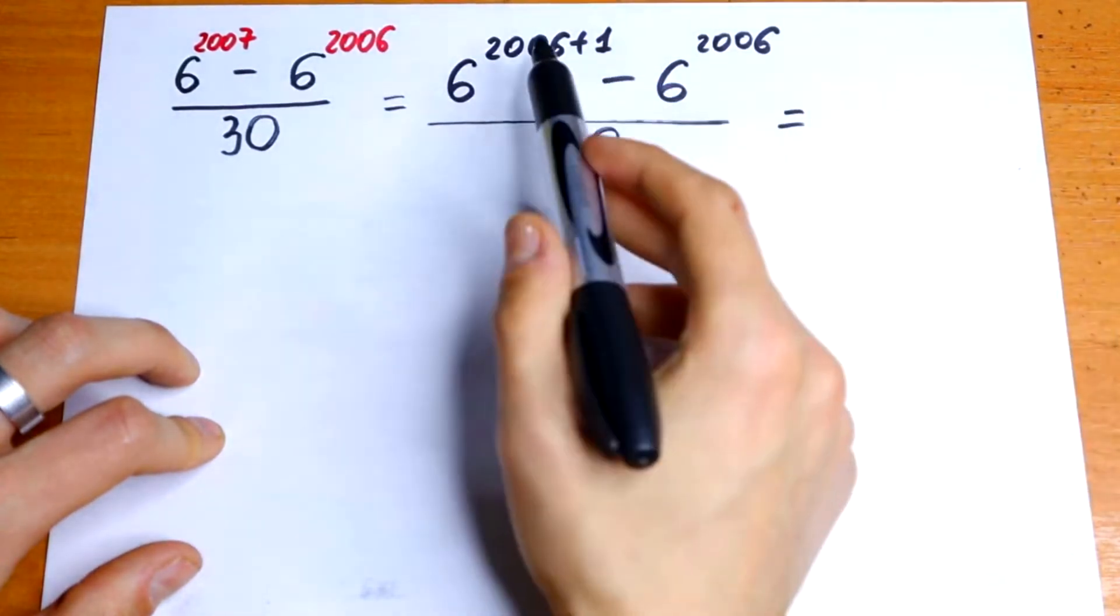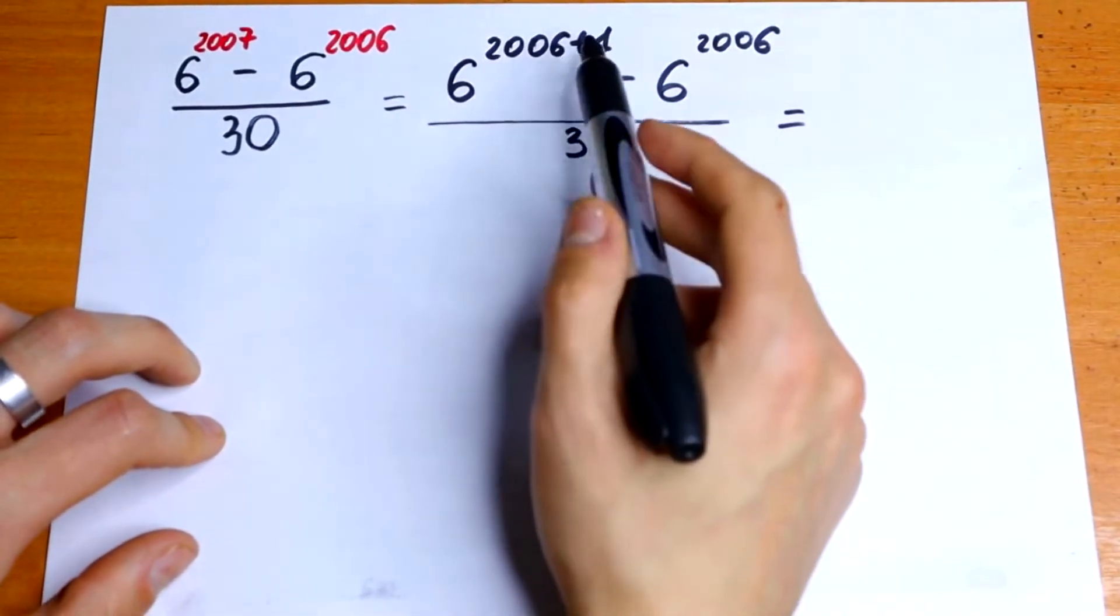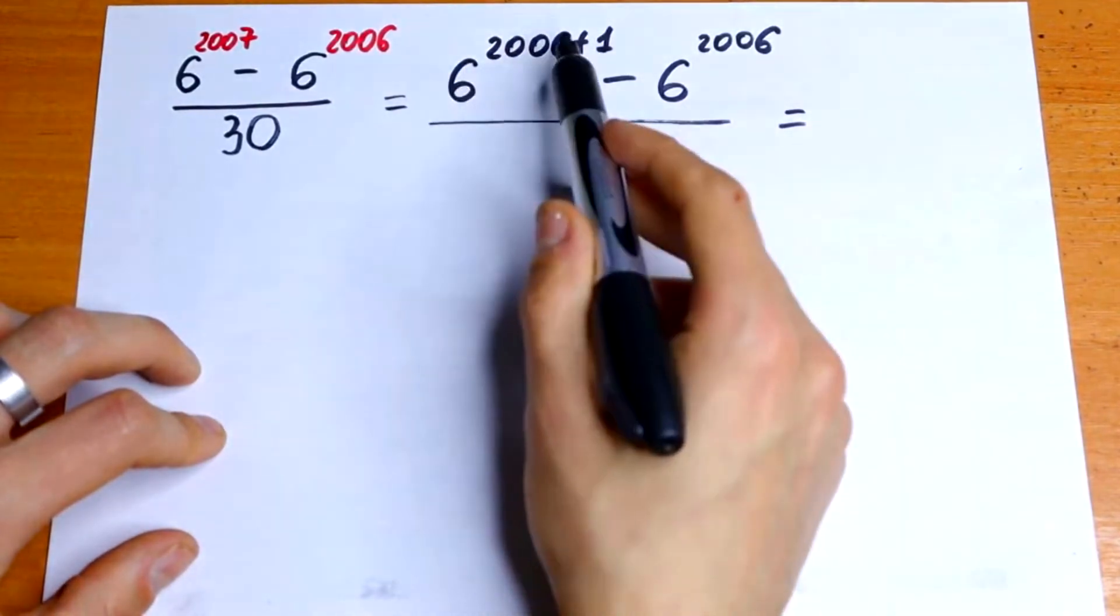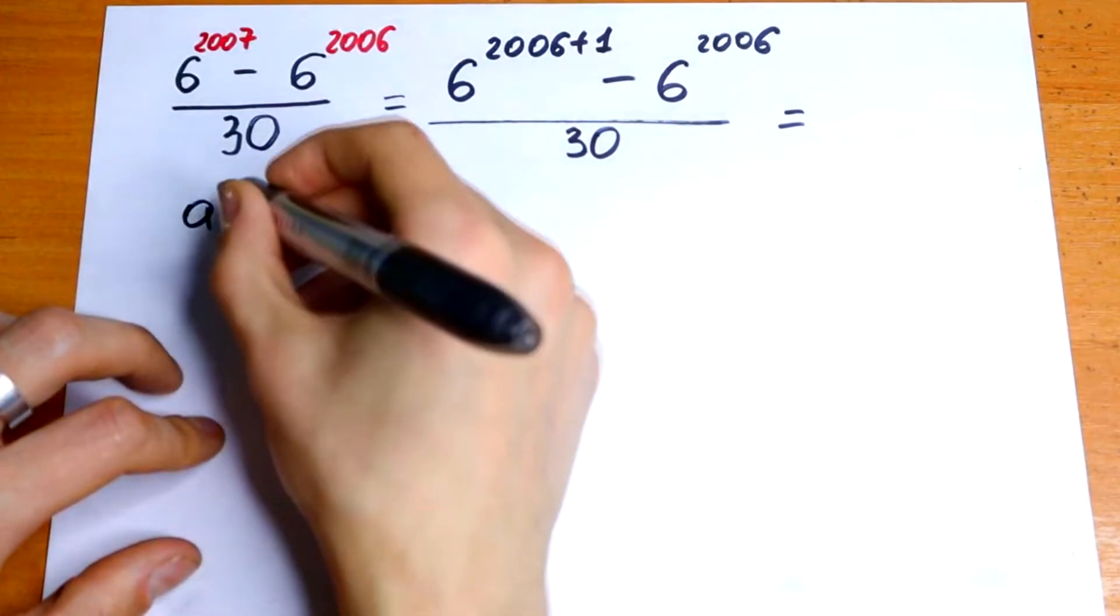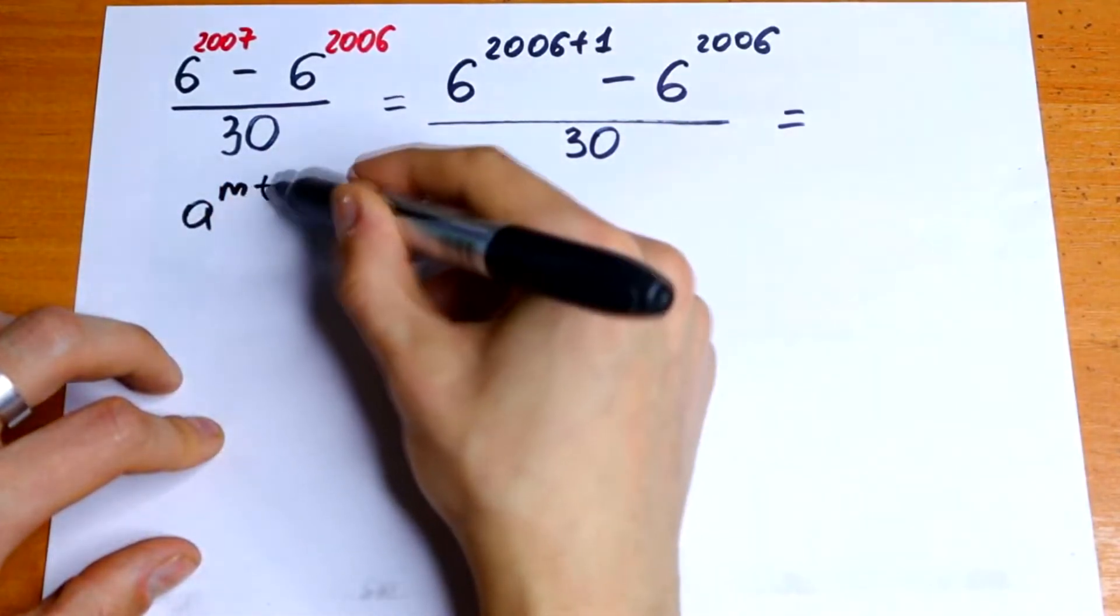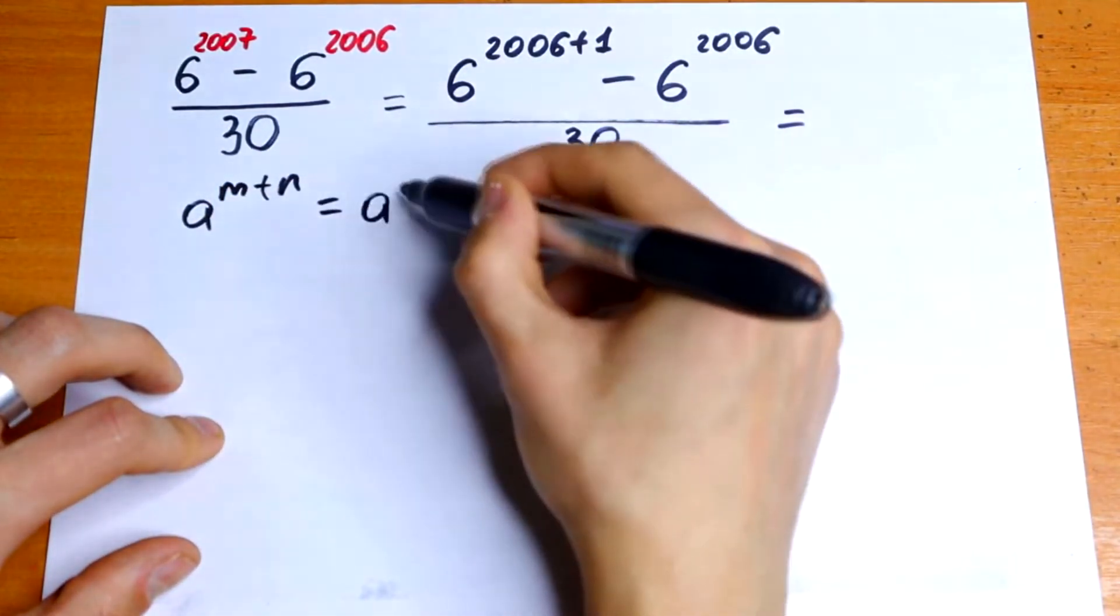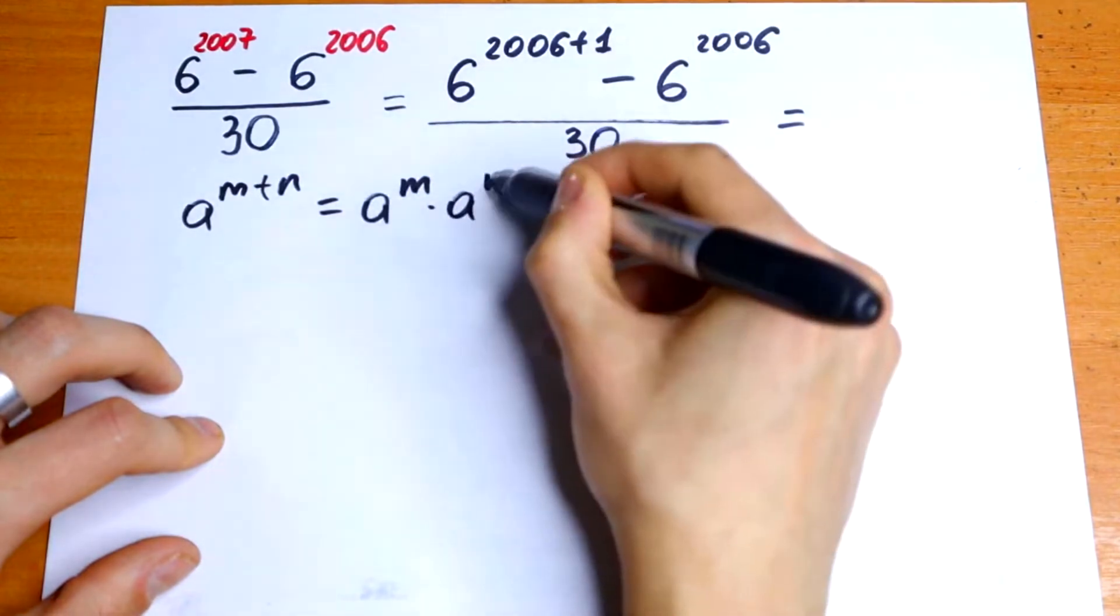You know that if we have a sum in our power we can break this power using an exponent power rule. So if we have a to the power m plus n we can write it as a to the power m times a to the power n.